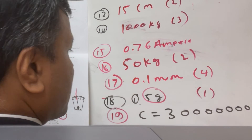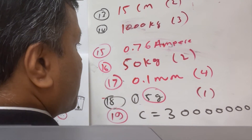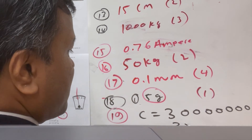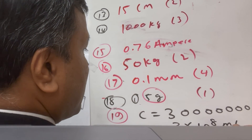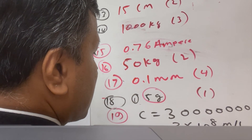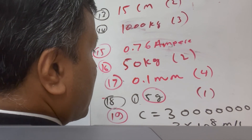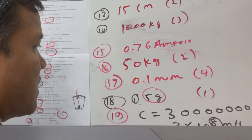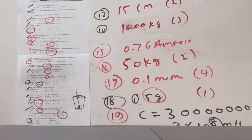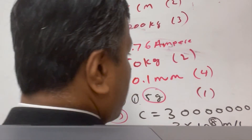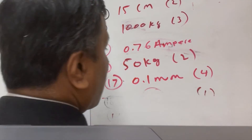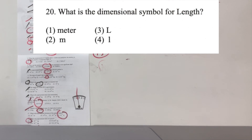Number nineteen: estimate the order of magnitude of the speed of light, which is 3 × 10⁸ meters per second. Since 3 is less than 3.16, you don't add anything to the exponent, so the order of magnitude is 10⁸ — just 8. That is option number three.